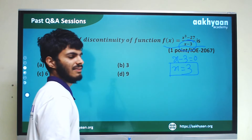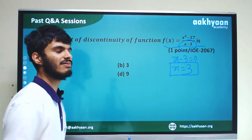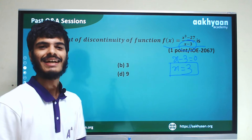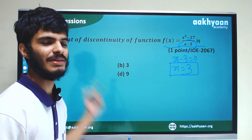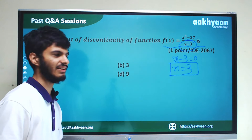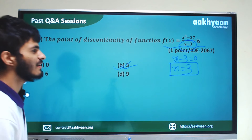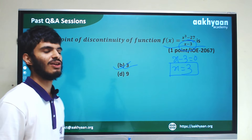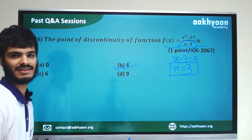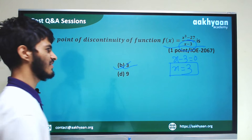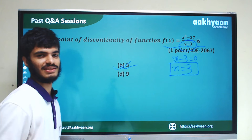The function is discontinuous at x equal to 3. The function is continuous elsewhere but at x equal to 3 there is a discontinuity, which is the basic theorem example. So B is our correct answer. We use x equal to 3 to solve the limit.